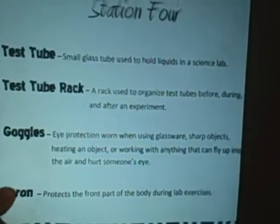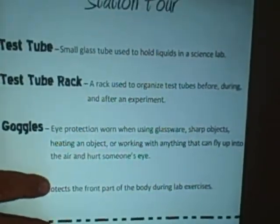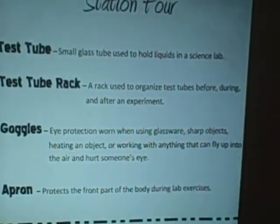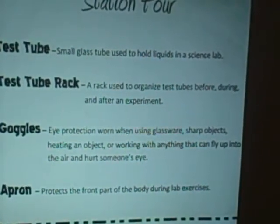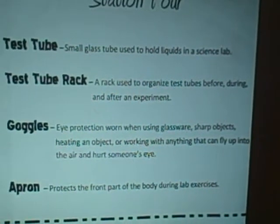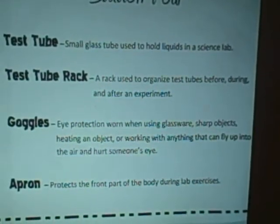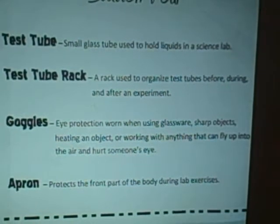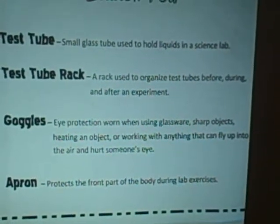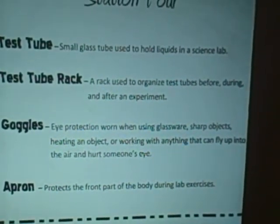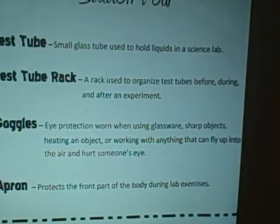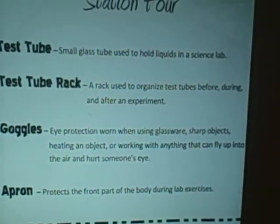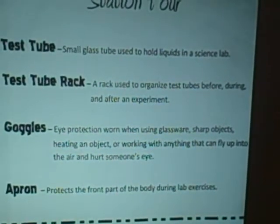Station four. A test tube is a small glass tube used to hold liquids in a science lab. The test tube rack is used to organize the test tubes before, during, and after an experiment. Goggles are preventative eye protection worn when using glassware, sharp objects, heating an object, or working with anything that can fly up into the air and hurt someone's eye. An apron protects the front part of the body during lab exercises.